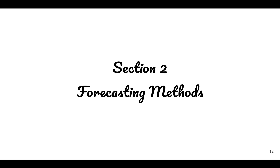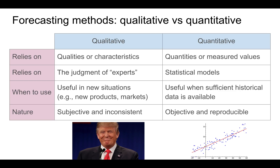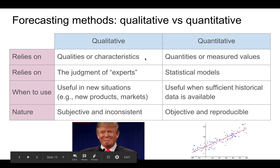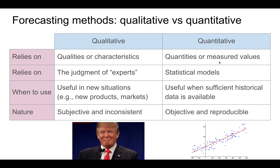Let's now talk about forecasting methods. Broadly speaking, there are two types: qualitative and quantitative. Qualitative methods are based on qualities or characteristics, whereas quantitative methods are based on quantities or measured values. Qualitative methods require the use of experts, such as Mr. Donald Trump. Quantitative methods require statistical models. Qualitative methods are more useful in new situations, such as new products or markets, but quantitative methods are better when you have sufficient historical data. Finally, qualitative methods tend to be subjective and inconsistent, whereas quantitative methods are objective and reproducible — if you give the same numbers, the formula will give the same output, whereas a person may make a different judgment based on whether they're tired, how they're feeling, or what they had for lunch.